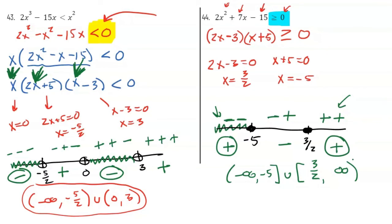So that's it — it's not too bad to solve these polynomial inequalities. A lot of kids overthink it, but it's all about getting those critical values, which are your zeros, putting them on a number line, and testing your intervals to see where you create positives and where you create negatives. Then you pick the intervals that make your inequality happy.